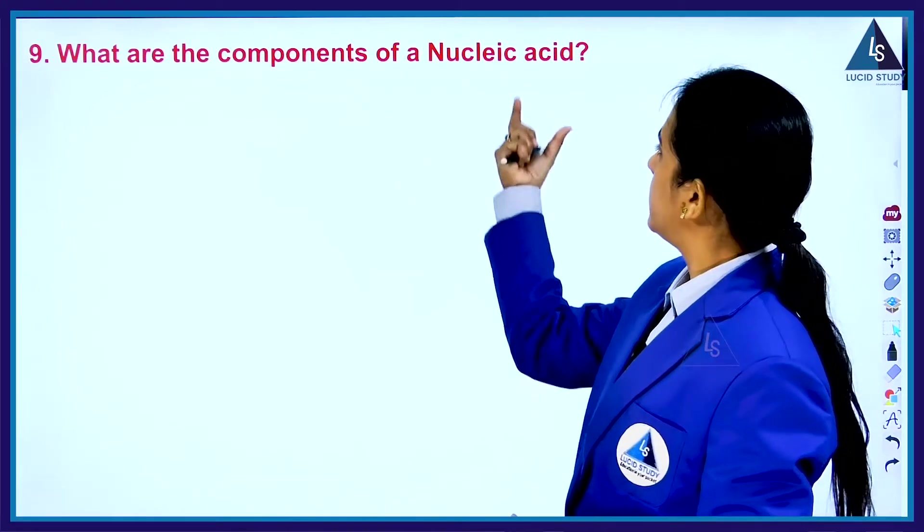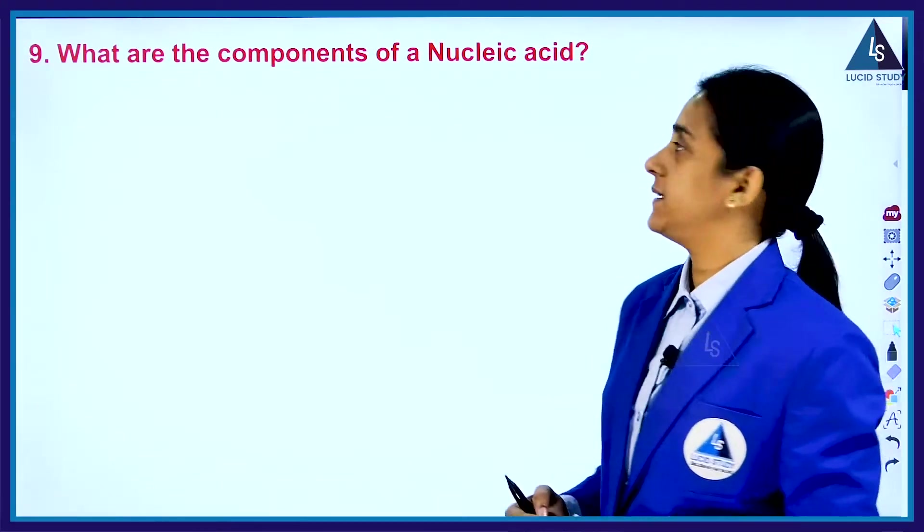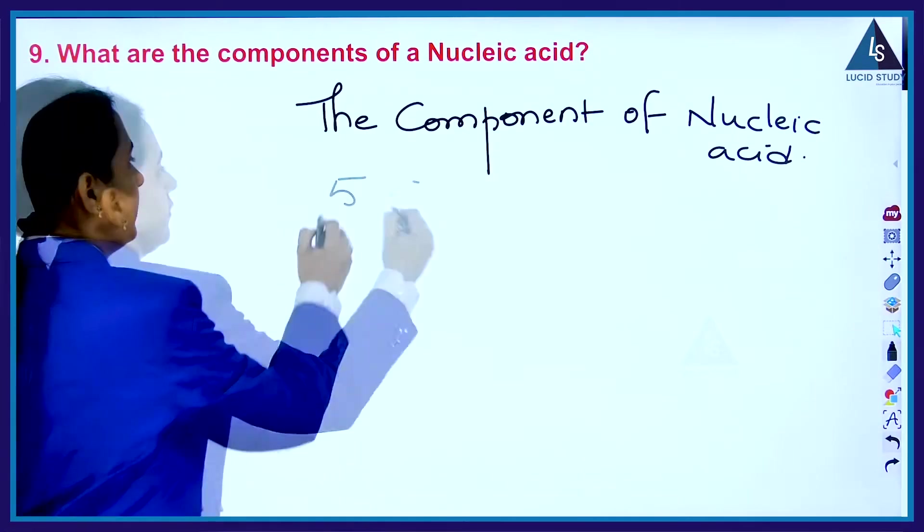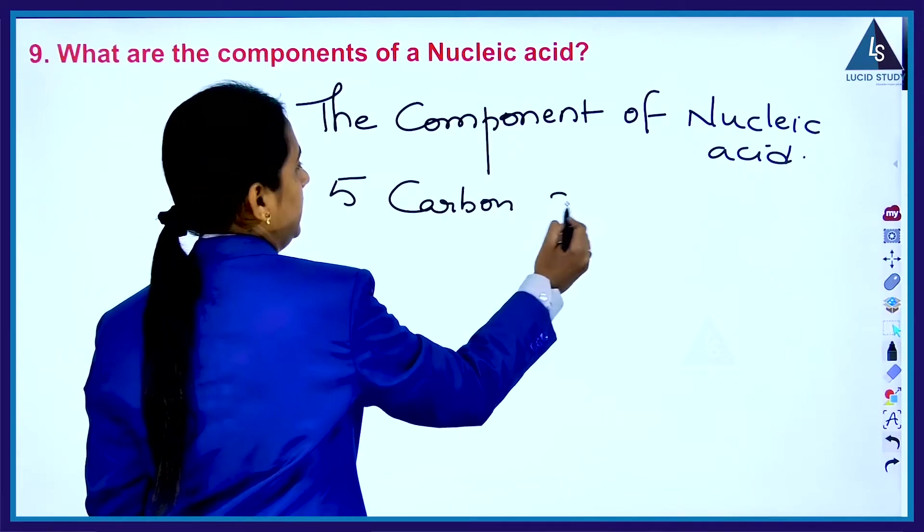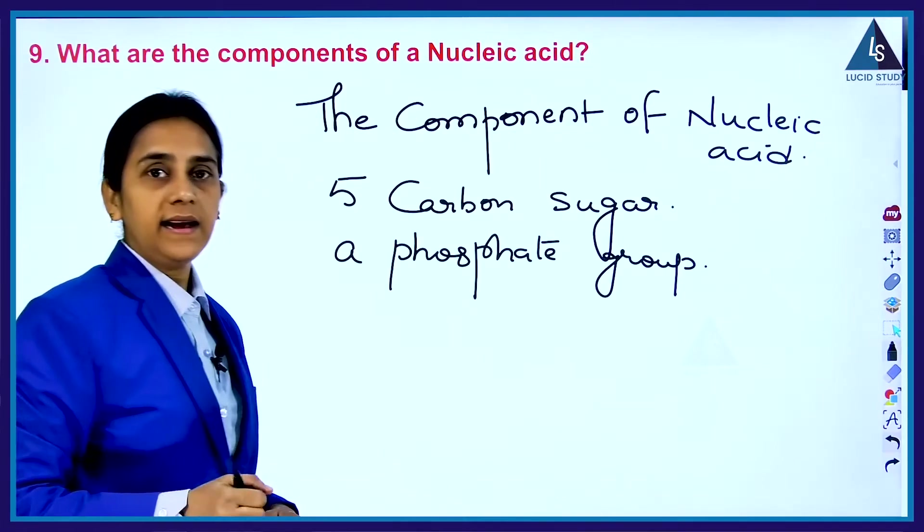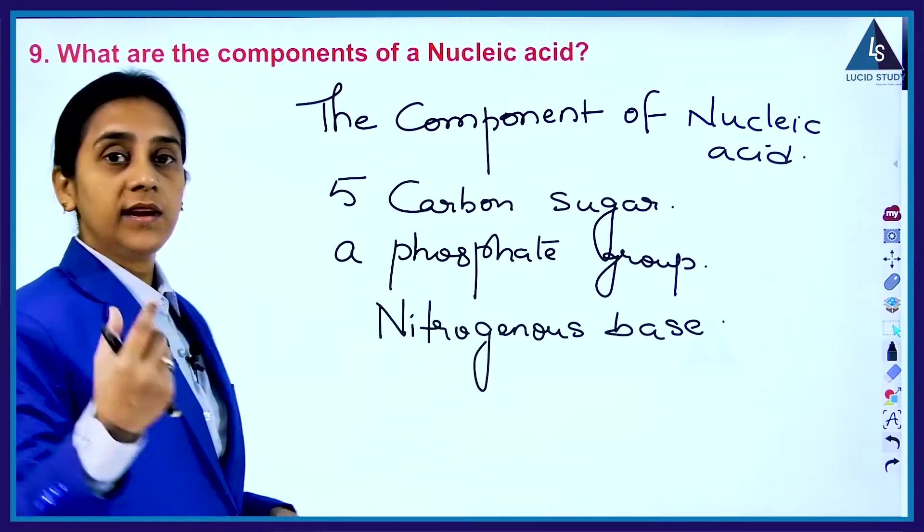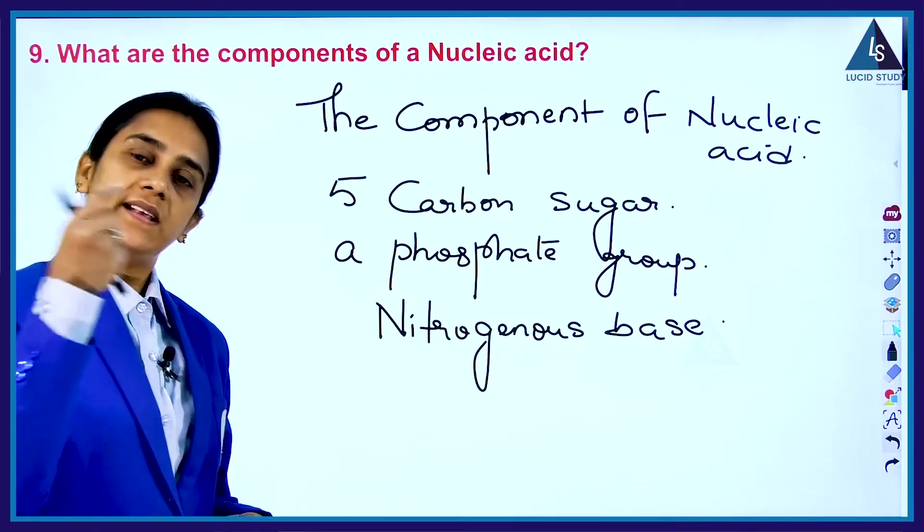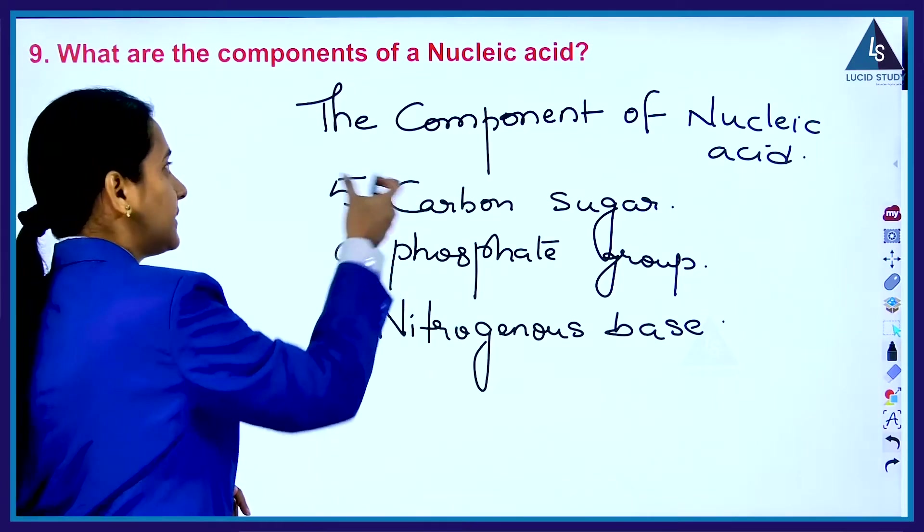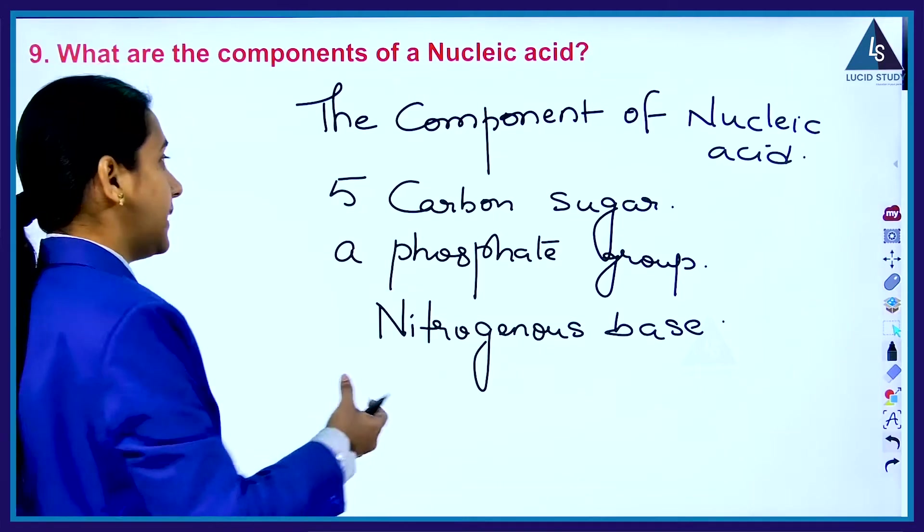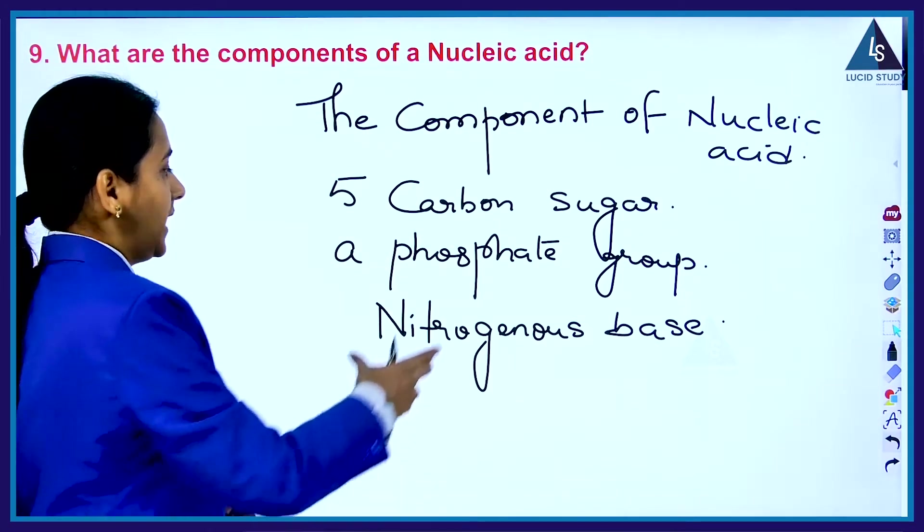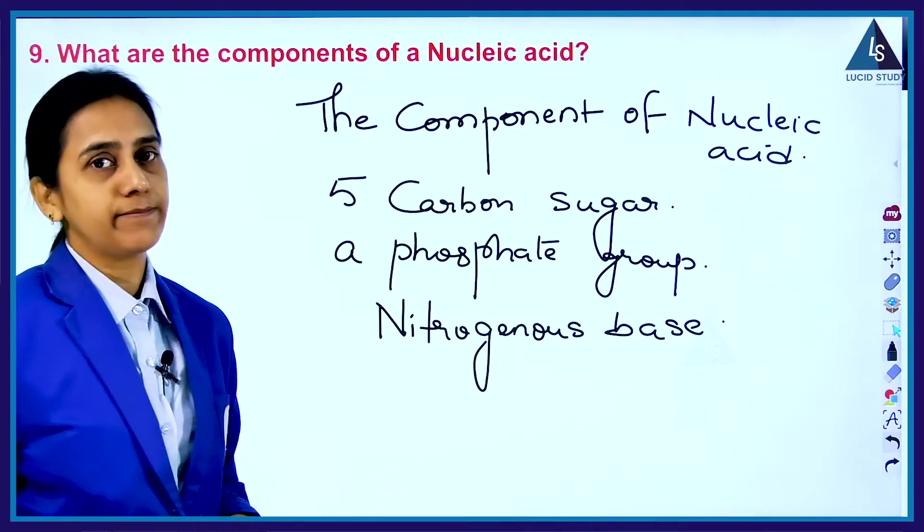The next question is: What are the components of the nucleic acid? The components of the nucleic acid contain the 5-carbon sugar, a phosphate group, and a nitrogenous base. The nucleic acid involves the DNA and the RNA. In the DNA and the RNA, these components are present: 5-carbon sugar, a phosphate group, and a nitrogenous base.